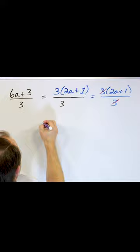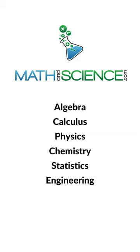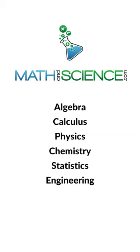So what you really have left over is just 2a plus one. And I can drop those parentheses because I basically can't combine these any further. Learn anything at mathandscience.com.